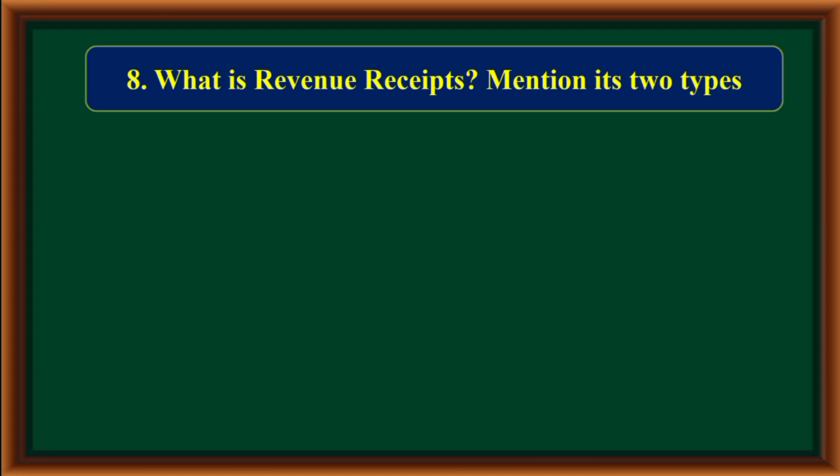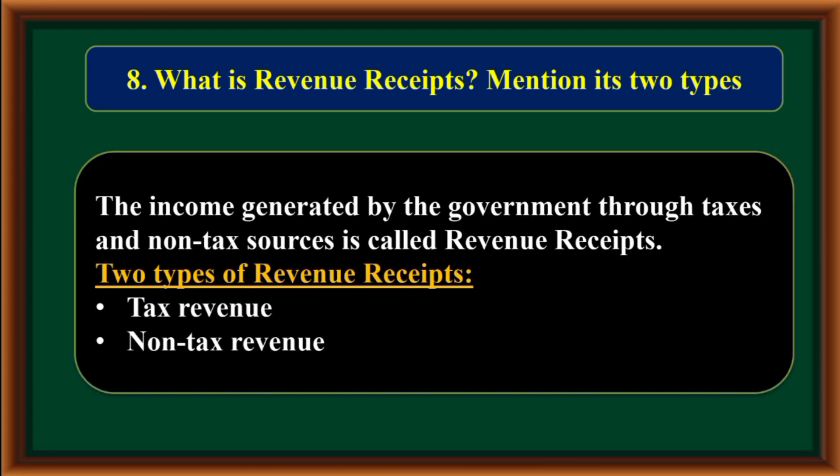What is revenue receipts? Mention its two types. The income generated by the government through taxes and non-tax sources is called revenue receipts. The two types of revenue receipts are tax revenue and non-tax revenue.